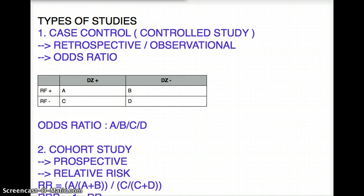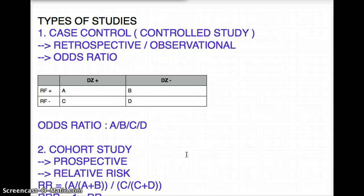The difference between case control and cohort study: the similarity is they both deal with disease and risk factor, but in case control we're looking back, while in cohort study we're looking into the future. Cohort study is when we have a bunch of people with a certain risk factor and we study them over a number of years to see if they develop a certain disease. For example, we take a bunch of smokers and study them to see if they develop COPD in the future. This looking into the future — prospective — is cohort study.